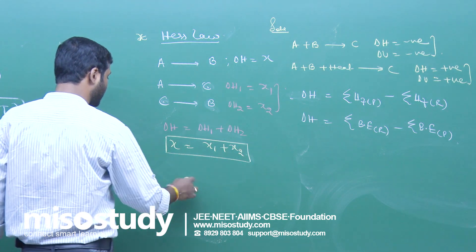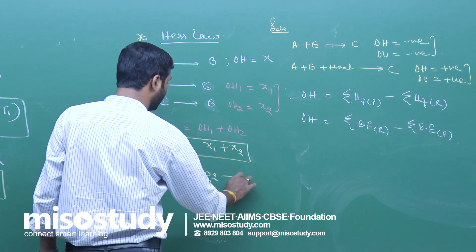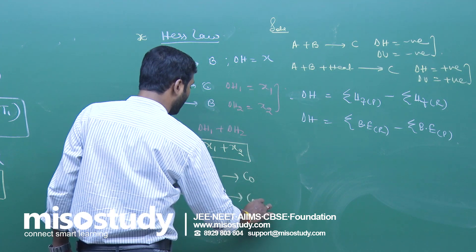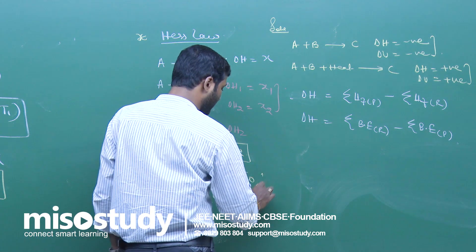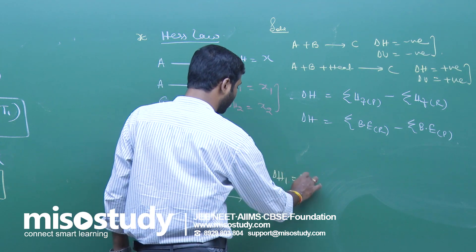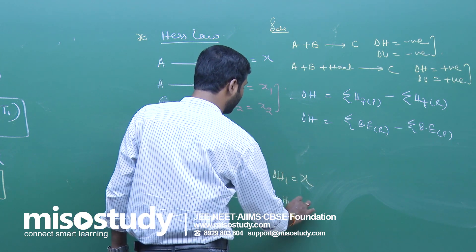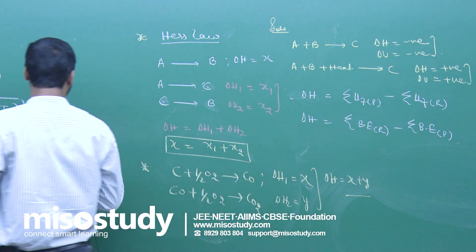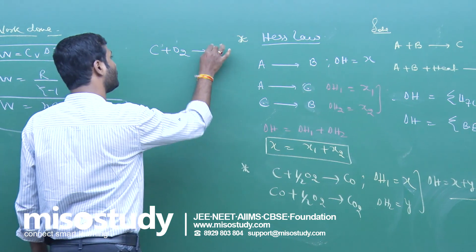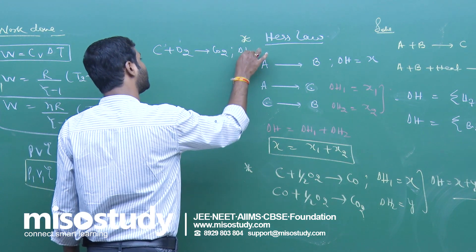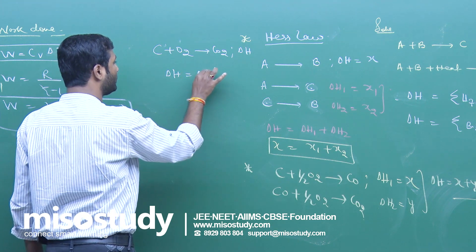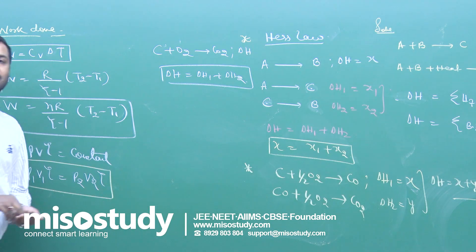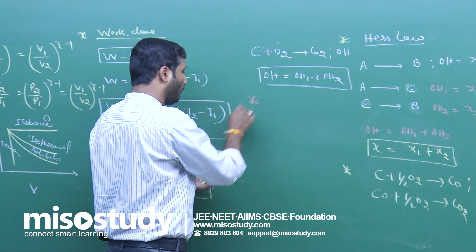For example: C plus O2 gives CO2 directly, or proceeds via CO as an intermediate in two steps with delta H1 equals x and delta H2 equals y. The overall delta H equals x plus y — exactly equal to delta H1 plus delta H2. This is the statement of Hess's Law.